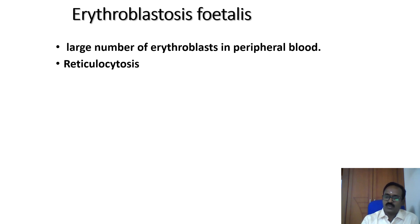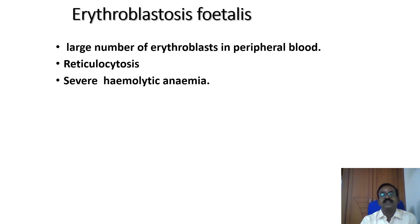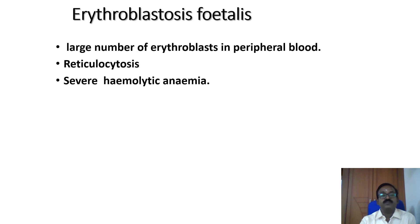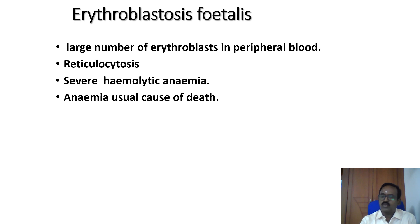Reticulocytosis is common. The reticulocyte is the immediate precursor of RBCs, so the reticulocyte count is increased in erythroblastosis fetalis. Severe hemolytic anemia occurs due to fetal RBCs being destroyed by the anti-Rh antibody from the mother's plasma, and anemia is the usual cause of death in erythroblastosis fetalis.